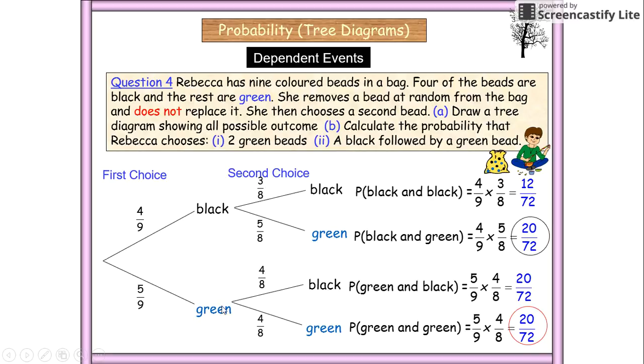Okay, this one is five over nine. We take out the green. We reduce both the numerator and the denominator by one. We get four over eight. And what is left is also four over eight. And then we times our numbers together.